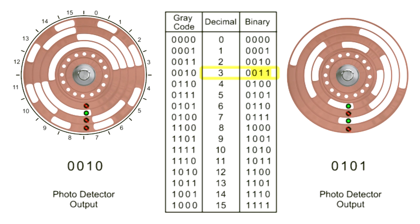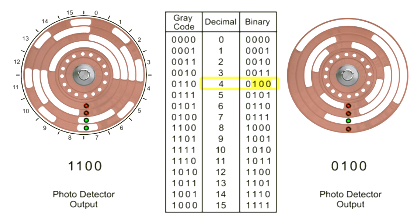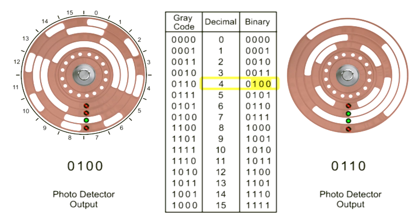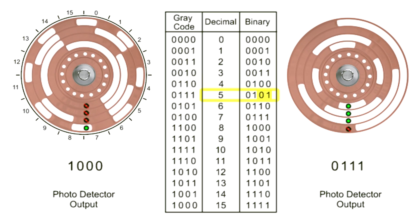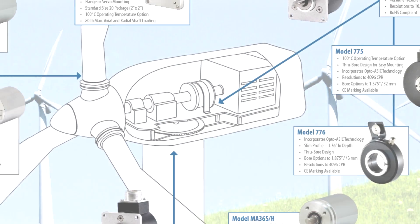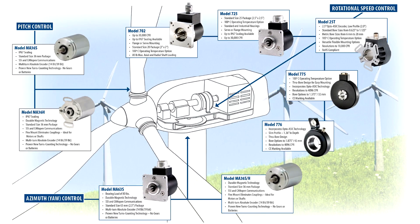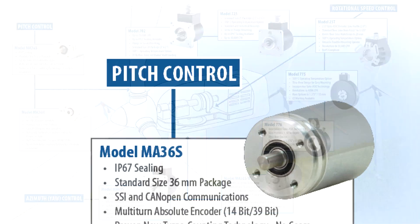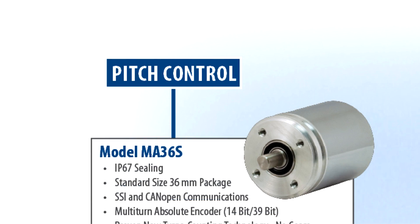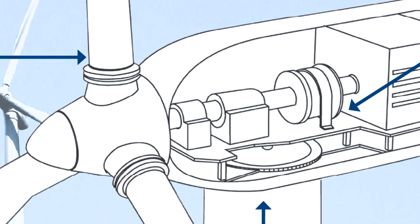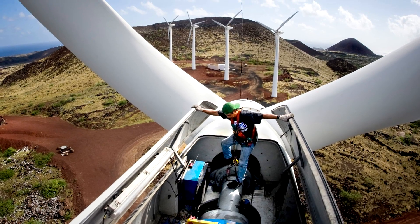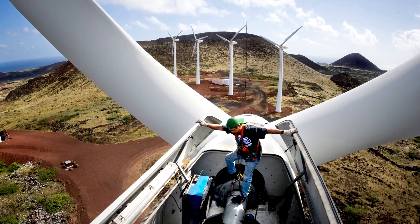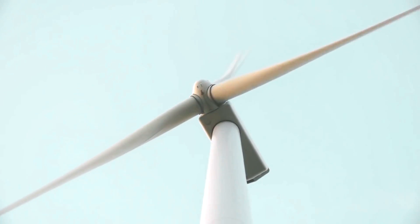The absolute encoder provides a unique digital word, or bit, for each increment of rotation. For example, an absolute encoder can be used to indicate the exact pitch of a wind turbine blade, allowing the blade's angle to be adjusted according to wind speed.